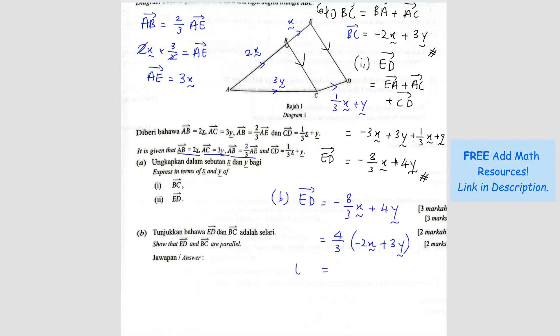So now we can see the relationship. The relationship is ED equals 4 over 3 of BC. So when we can show this, that means it's parallel. Because they both have the same vector. It's just that the length is different. So they are technically parallel because they have the same vector.